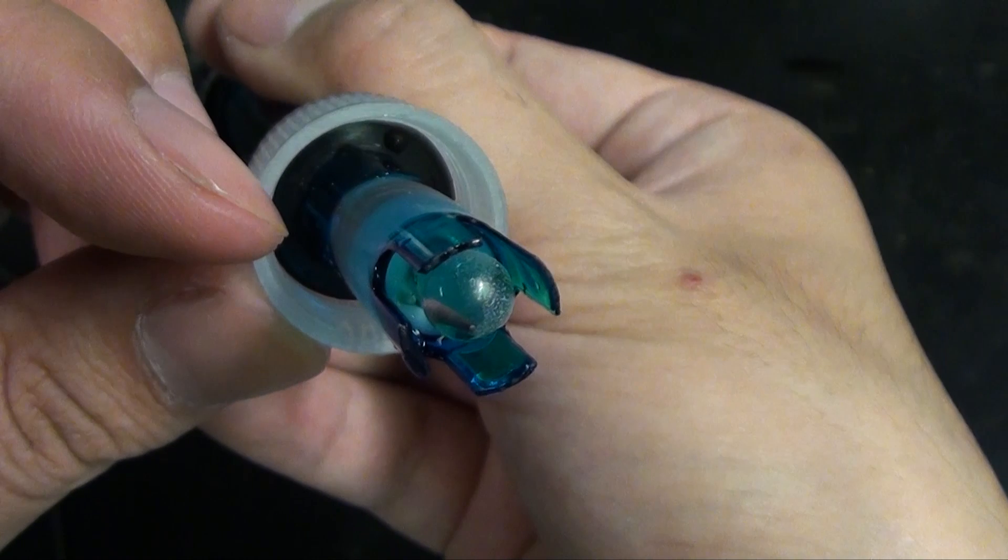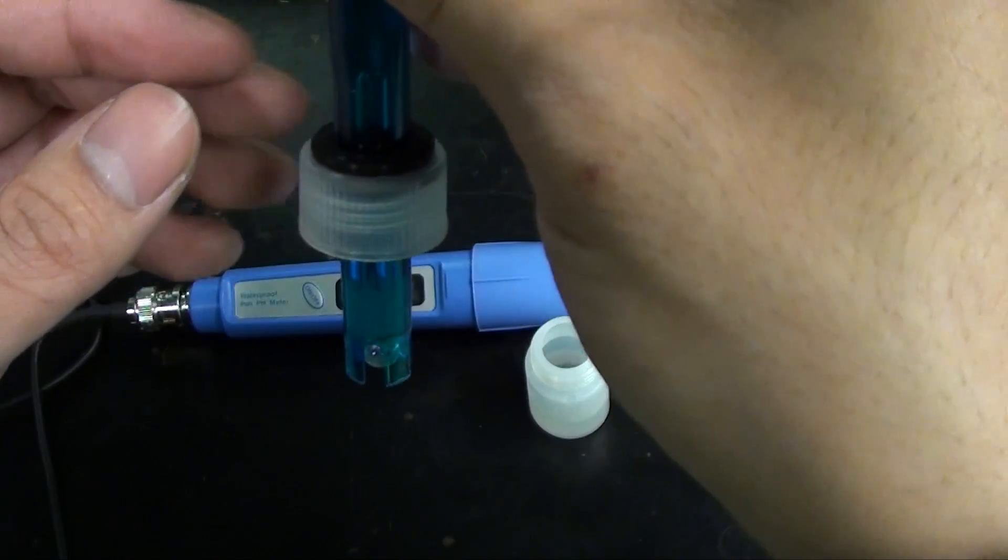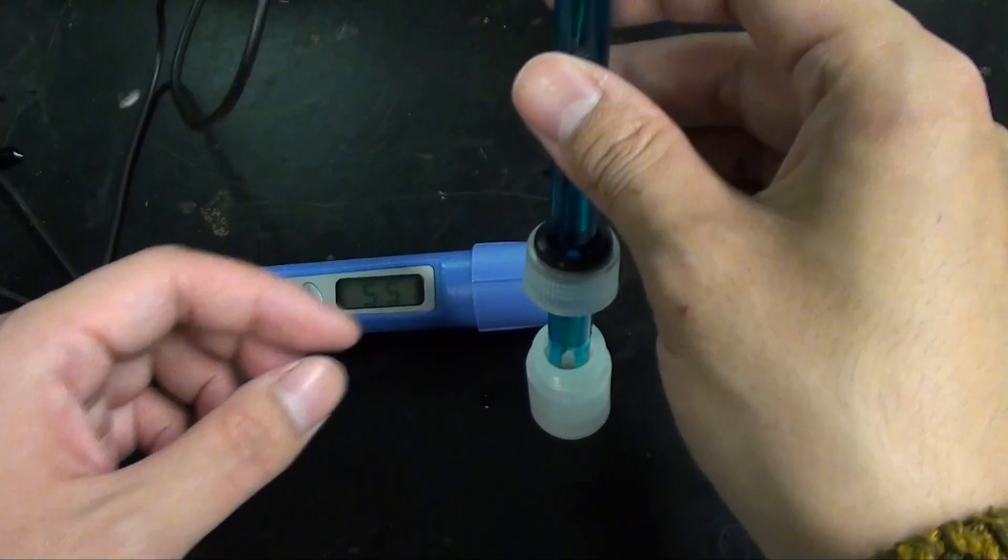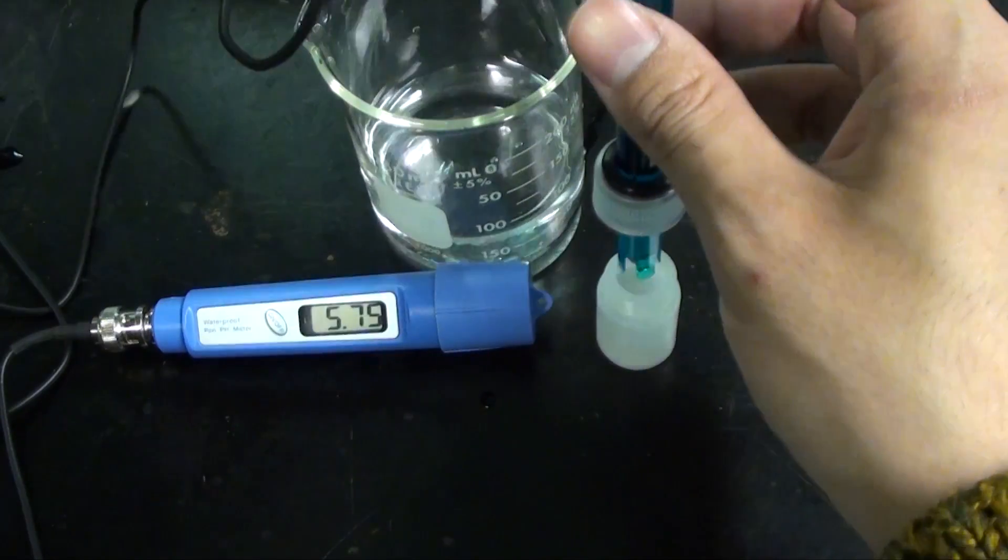For the glass electrode to work, you must immerse the electrode all the way up to this reference electrode. Otherwise you'll get erratic and irreproducible readings. Now I'm going to dip the electrode into some distilled water to wash off the storage solution.